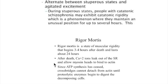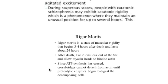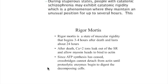Rigidity in rigor mortis starts about three to four hours after death and lasts for 24 hours. After death, calcium leaks out of the sarcoplasmic reticulum, allowing the myosin head to combine with actin, but it cannot detach because ATP synthesis has ceased. This state persists until proteolytic enzymes act to digest the decomposing tissue.